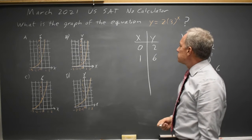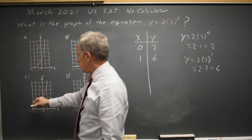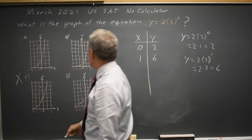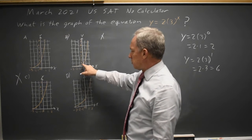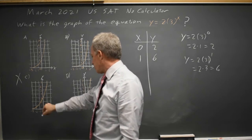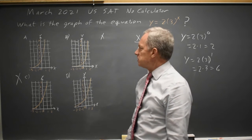So the correct answer should go through the point 0, 2, which matches choice A but not choice C. Not choice B, that goes through 0, 1, where choice C goes through 0, 3. And it does match choice D. So the correct answer is either A or D.